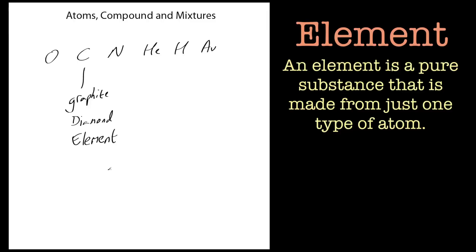If I drew the structure of carbon as a chemist, I could draw lots of carbon atoms stuck together. Carbon is allowed to have four bonds, so each carbon would have four bonds, and so on. No other atom apart from carbon is present in that pure form, and that's what makes an element an element.